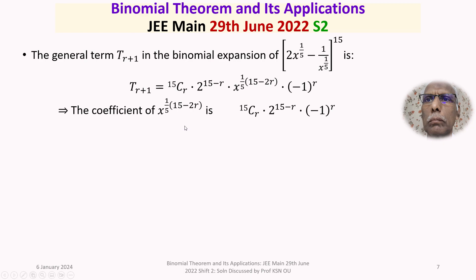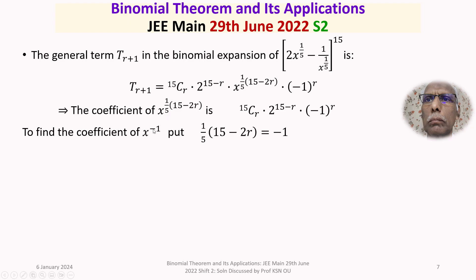m and n are the coefficients of x^(-1) and x^(-3) respectively. To find the coefficient of x^(-1), set the power of x equal to -1: (1/5)(15 - 2r) = -1. Solving for r, we get r = 10.